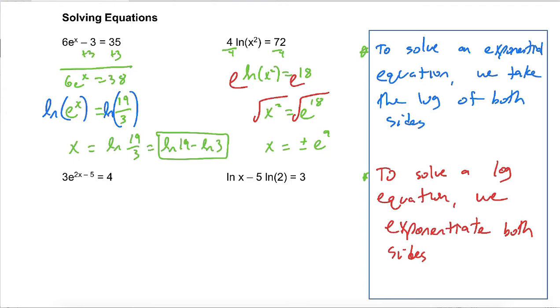So x is equal to plus or minus e to the 9th. This was a log equation, so we do have to check to make sure that our answers work. But notice how, since we squared the argument of the log, it's always positive. x squared is always positive. Unless x is 0. So the only thing that x couldn't be was 0, which means both positive and negative e to the 9th work out just fine.